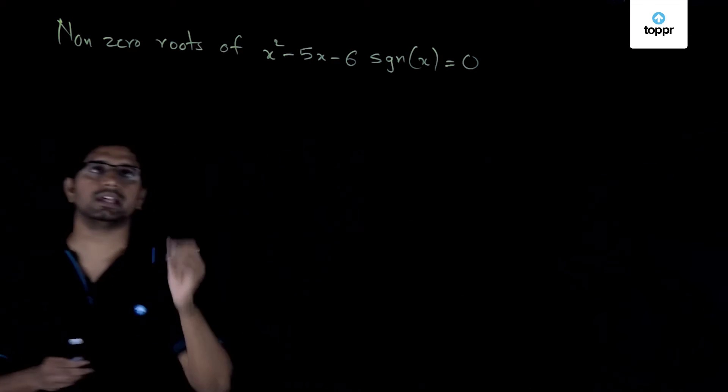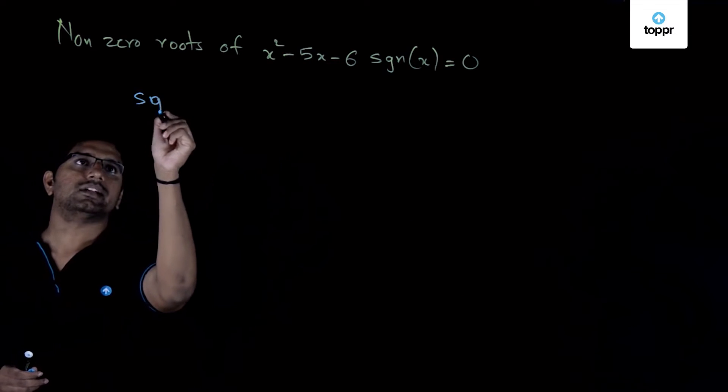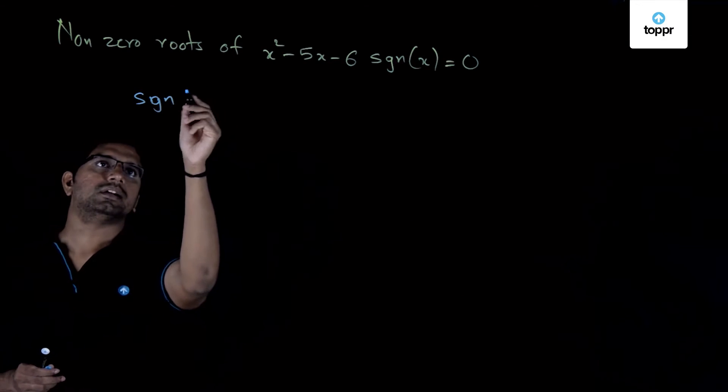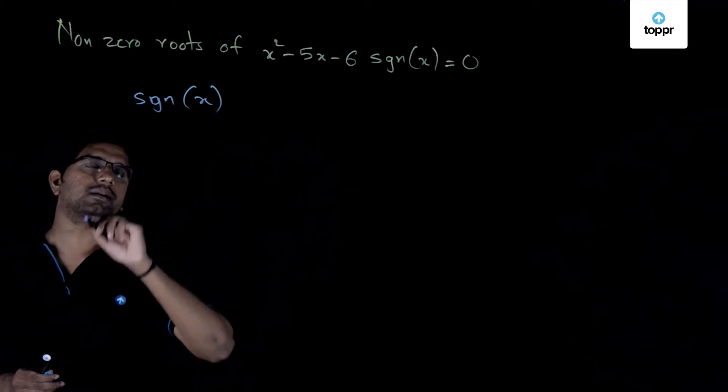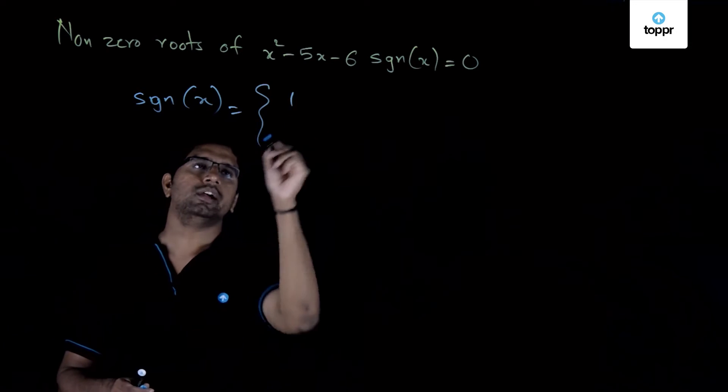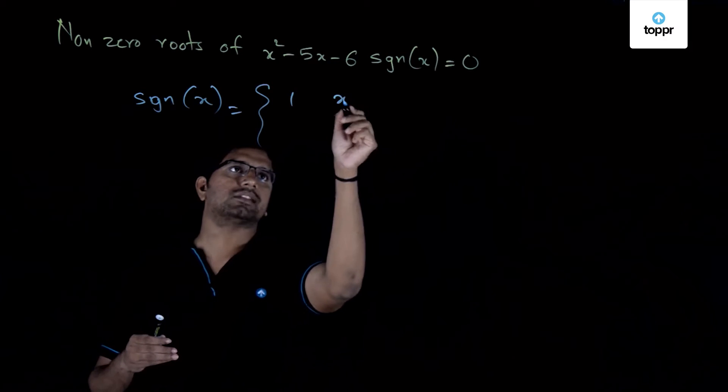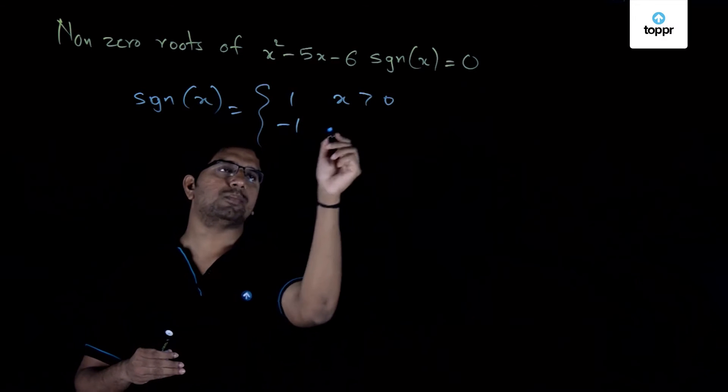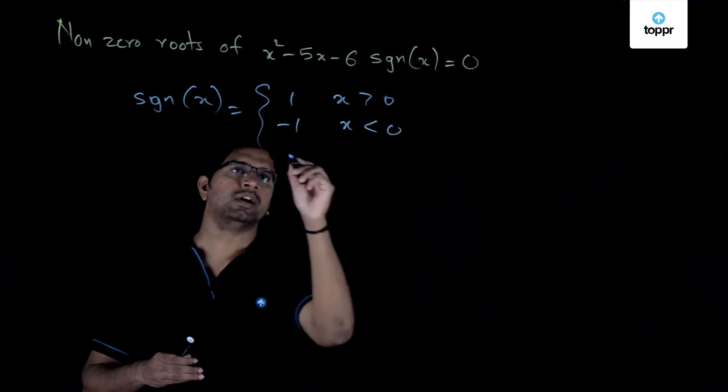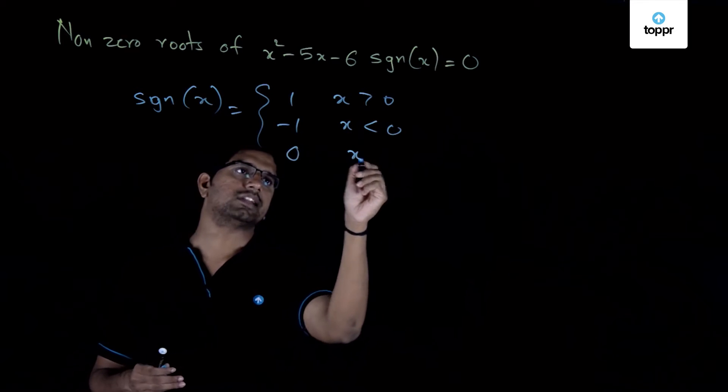So what is the signum function? That is the first part of the problem, identifying signum of x. So this we know it is equal to: it takes a value 1 if x is greater than 0, it takes a value minus 1 if x is less than 0, and it takes a value 0 if x is equal to 0.